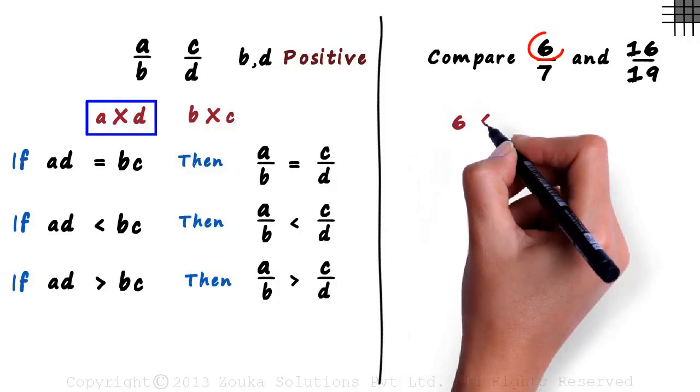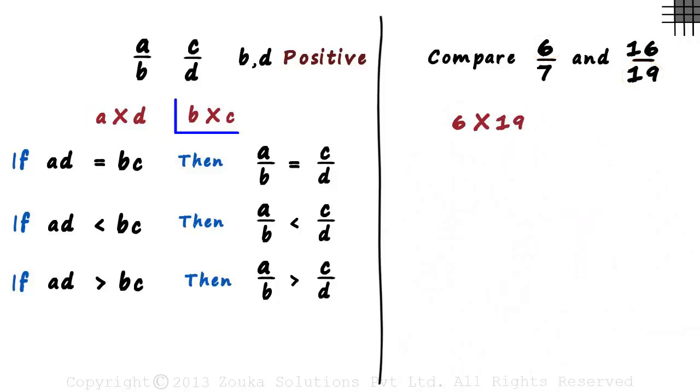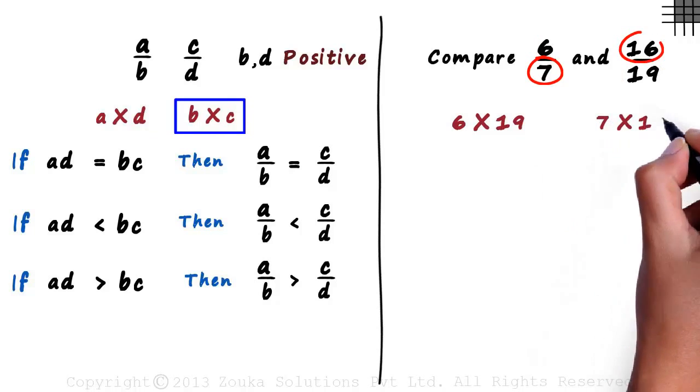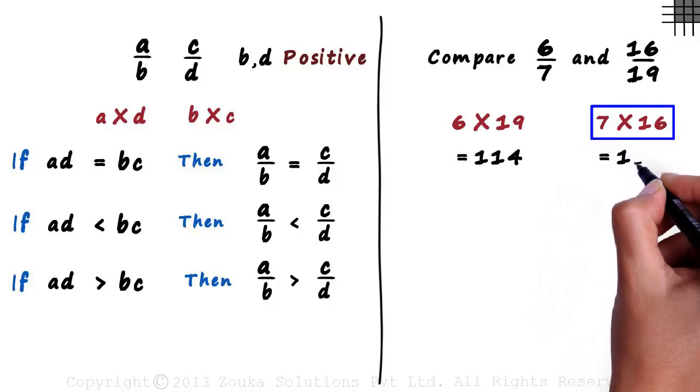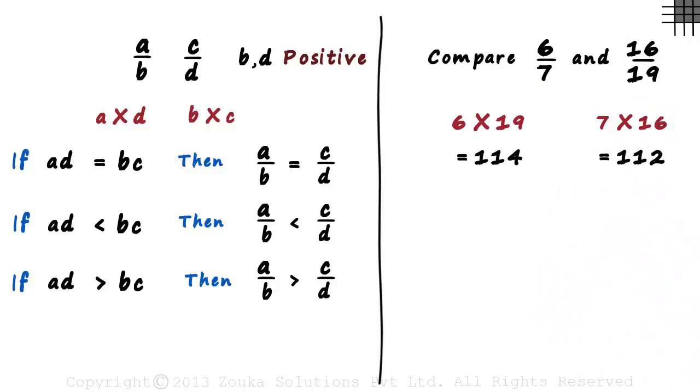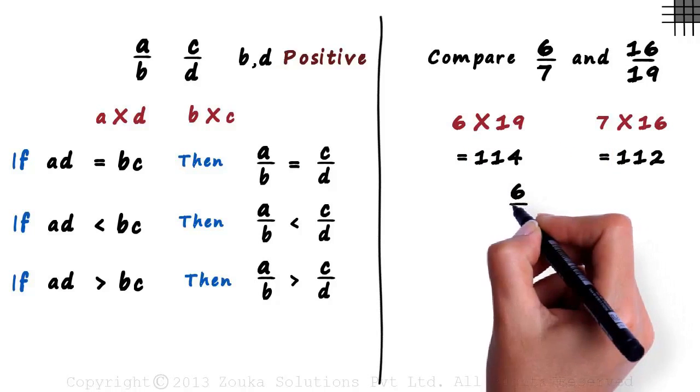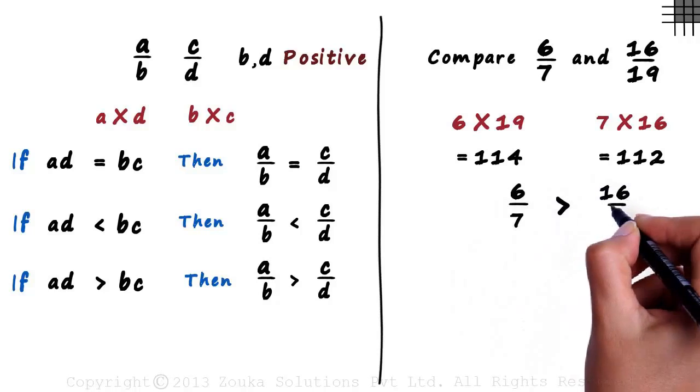AD in this case will be 6 times 19, and BC will be 7 times 16. As we can see that 114 is greater than 112, we can be sure that 6 by 7 is greater than 16 by 19.